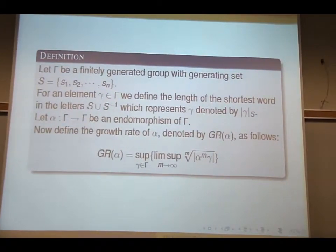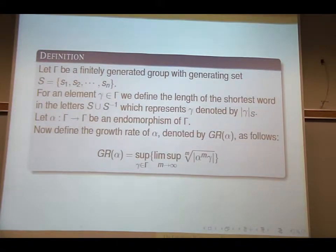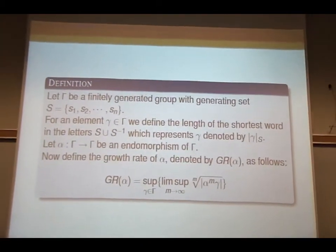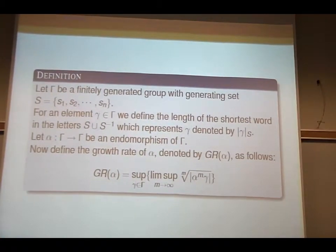So let me define the definition. This is due to Bowen. Let Gamma be a finitely generated group with generating set S, S1 through SN. And let's first define the length of an element, which is the shortest word in the generating set, which represents gamma. We show it by, as it's noted there.